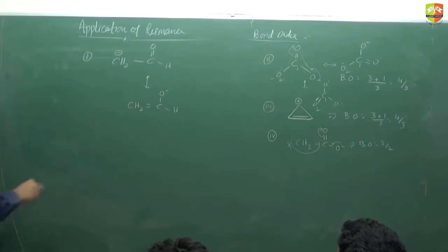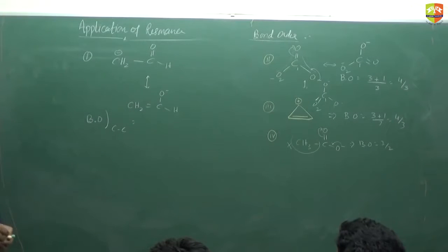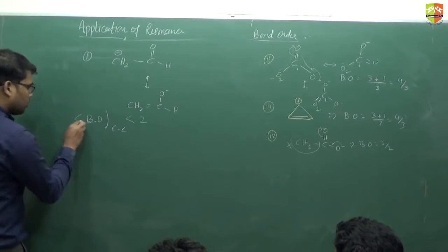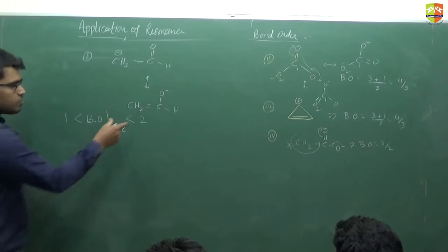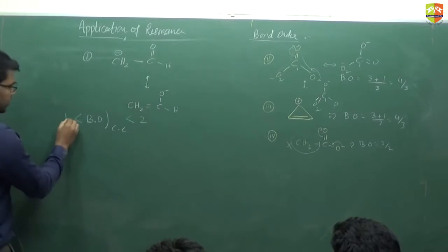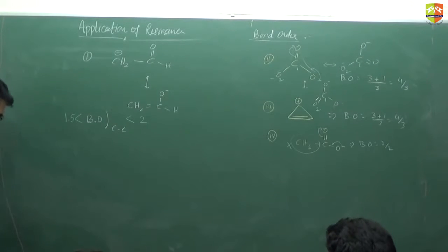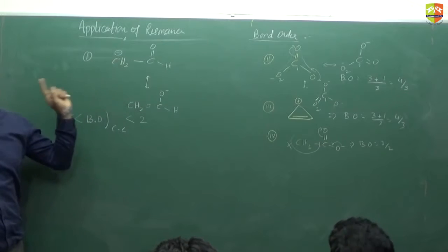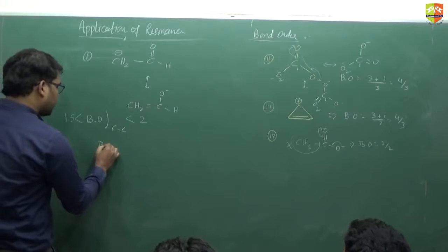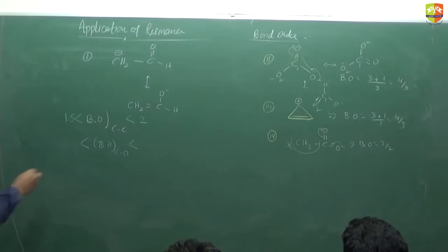Now if you have to find out the bond order of the carbon-carbon bond, the exact value we cannot find, but we can say the bond order of the C-C bond lies in a range. First, it is between one and two — here we have one, here we have two. Since this structure is more stable it contributes more, so we can further narrow it: the bond order lies between 1.5 and 2. For the carbon-oxygen bond, the range is 1 to 1.5.